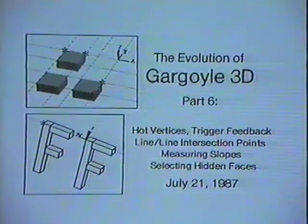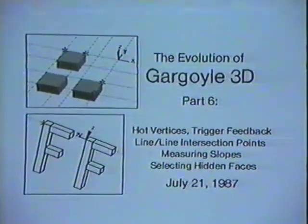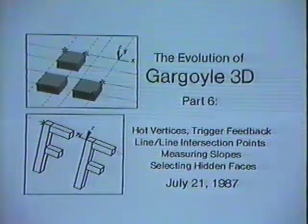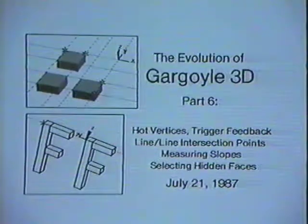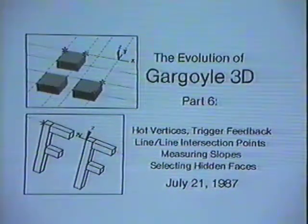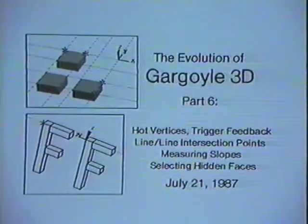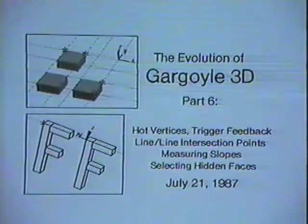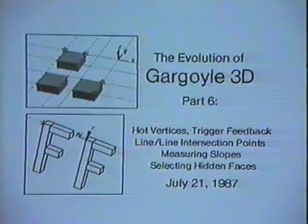This is the evolution of Gargoyle 3D Part 6. Since last time, five major features have been added to Gargoyle 3D, including the ability to make the vertices of blocks hot so that they trigger alignment lines, a new kind of feedback that helps you tell which alignment line you're snapping to by highlighting the vertices that trigger it, intersection points of alignment lines computed and snappable, the slopes of objects in the scene can be measured, and hidden faces can be selected.